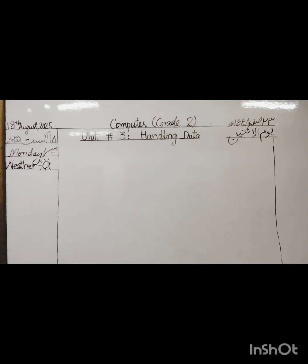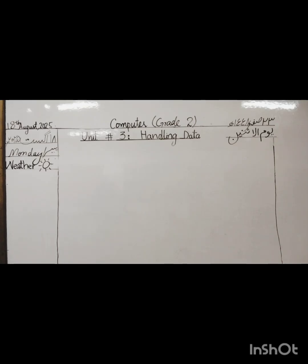Tell me: what is the difference between data and information? Usafa, tell me any other difference. Data is unorganized form, while information is organized form. Or we can say: data is rough figures and numbers, while information is processed data. Who can give me an example? When we say 2 and 3, this is data. When we add them and get the answer 5, that is information.